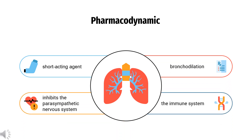Pharmacodynamics. Ipertropium is a short-acting agent that inhibits the parasympathetic nervous system at the level of the airway, which then produces bronchodilation. The effect of this agent starts after 1 to 2 hours, and it is known to last only from 4 to 6 hours.